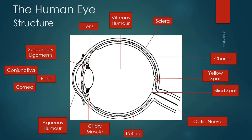The yellow spot is the part that has the most cones. The blind spot is an area where there are no rods and cones, because the rods and cones are leaving the retina as the optic nerve, which transmits the impulse of sight to your brain.